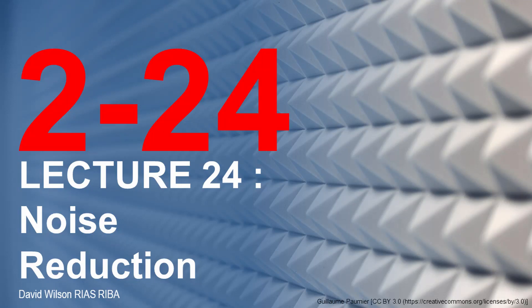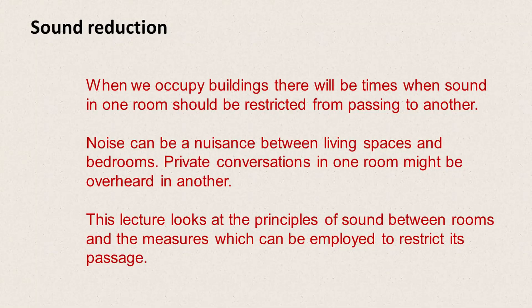This is lecture 24 in this series. This lecture will look at noise reduction. When we occupy buildings, there will be times when sound in one room should be restricted from passing to another. Noise can be a nuisance between living spaces and bedrooms, and private conversations in one room might also be overheard in another. This lecture is going to look at the principles of sound between rooms and the things that we can do to restrict its passage.